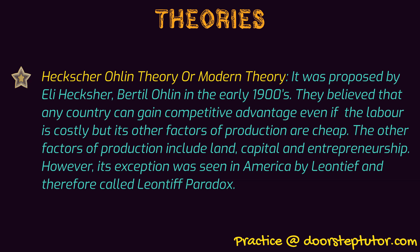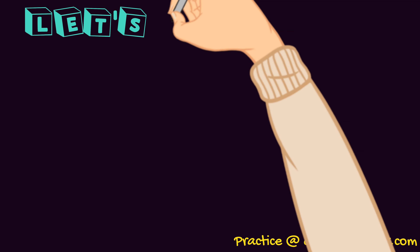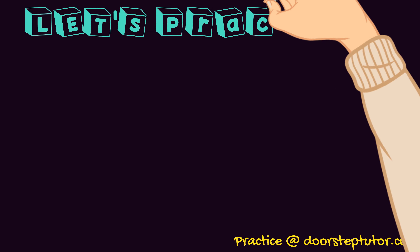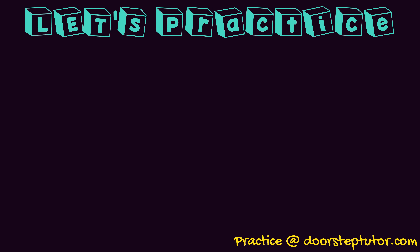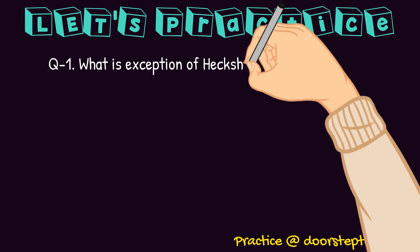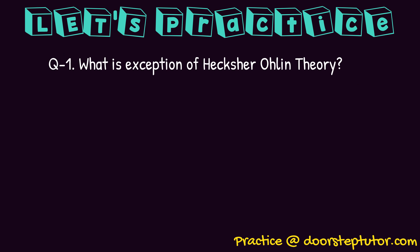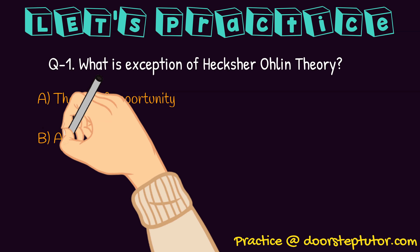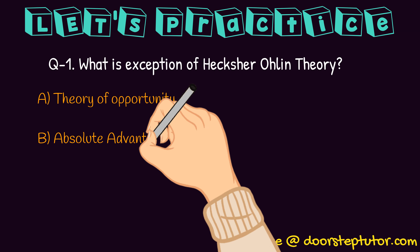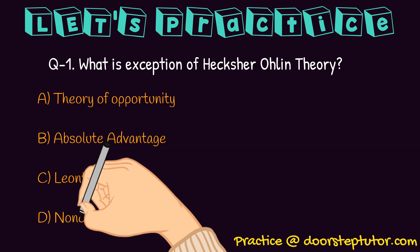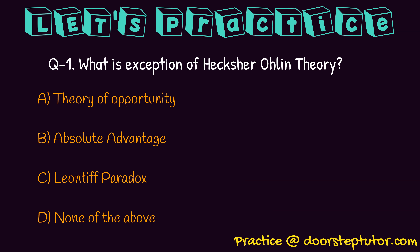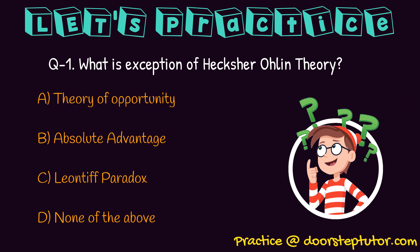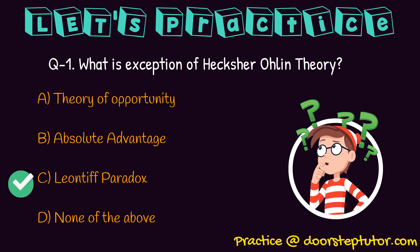Let us now practice some important questions. What is the exception of the Heckscher-Ohlin theory? The options are: theory of opportunity, absolute advantage, Leontief paradox, or none of the above. We just discussed that the Leontief paradox, given by Sir Leontief, is basically the exception of the Heckscher-Ohlin theory.